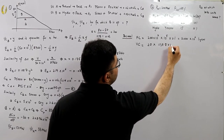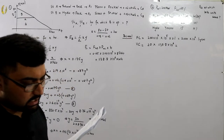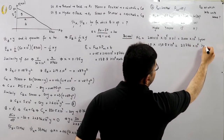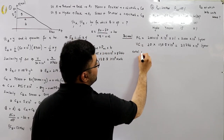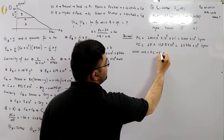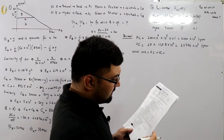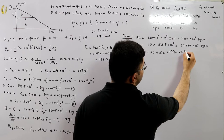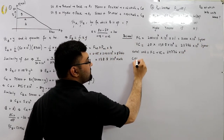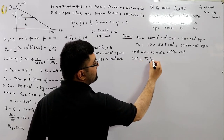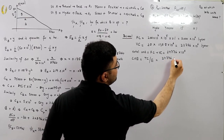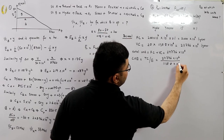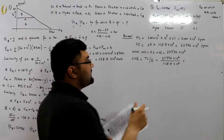Variable cost for thermal = 20 × 1138.8 × 10⁶ = 22,776 × 10⁶ rupees per year. Total cost = fixed + variable = 24,776 × 10⁶ rupees per year. Cost of electricity = total cost / energy units = 24,776 × 10⁶ / 1138.8 × 10⁶ = rupees 21.75 per kilowatt hour.